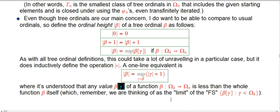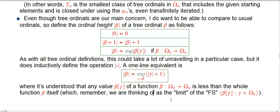It's really important that any value of a function beta is less than the whole function beta itself. That's because the way we like to think of beta is that it's the limit of a fundamental sequence that consists of the values of beta leading up to beta itself.